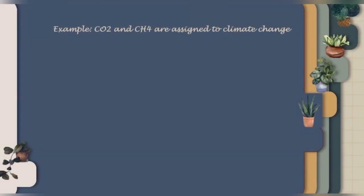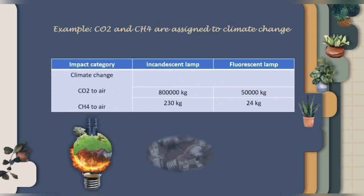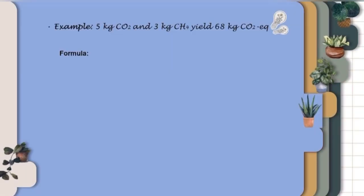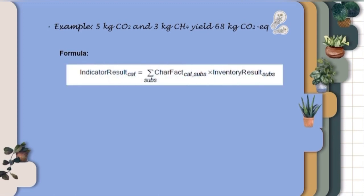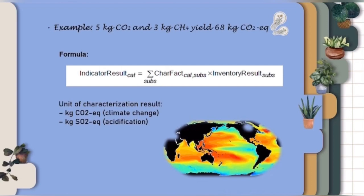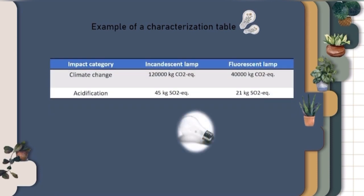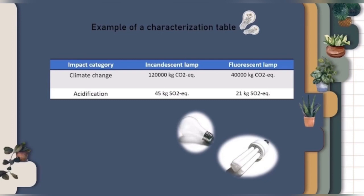CO2 and CH4 are assigned to climate change. The impact category for climate change for an incandescent lamp is 800,000 kg CO2 to air, while for a fluorescent lamp it is 50,000 kg. Incandescent lamp also produces 230 kg CH4 to air, and fluorescent lamp produces 24 kg CH4 to air. Example: 5 kg CO2 and 3 kg CH4 yield 68 kg CO2 EQ using the characterization formula. Units of characterization results are kg CO2 EQ for climate change and kg SO2 EQ for acidification. In the characterization table, the impact category for climate change for incandescent lamp is 120,000 kg CO2 EQ, while for fluorescent lamp it is 40,000 kg CO2 EQ. For acidification, incandescent lamp is 45 kg SO2 EQ and fluorescent lamp is 21 kg SO2 EQ.